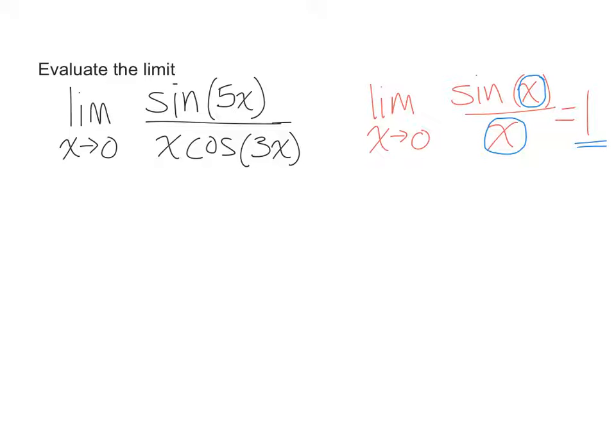So in order to make something down here in the denominator match what we have here with the 5x, we already have the x, it looks like we just need a 5 down here in the denominator. To keep things equal, if you multiply the denominator by 5, you should also multiply the numerator by 5.